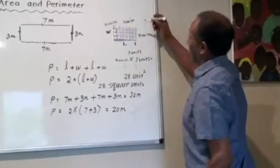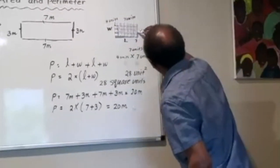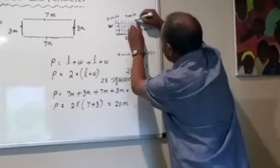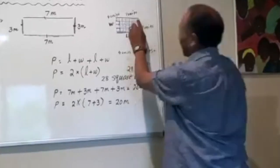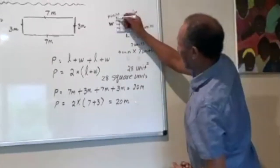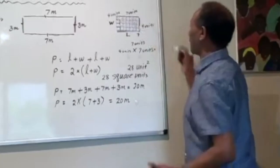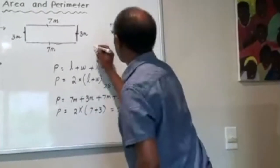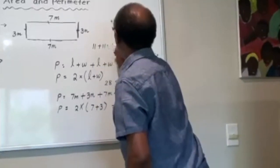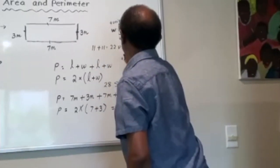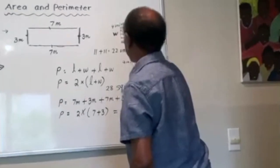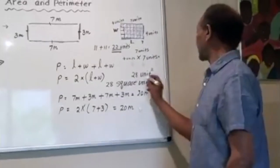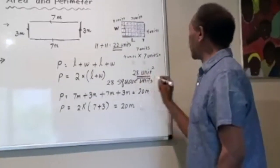The perimeter is just measuring the outside. Four units here — four plus seven is 11. I have the same thing, 11, on the other side. So 11 and 11 equals 22 units. We have different answers: the perimeter is 22 units, and the area is 28 square units.